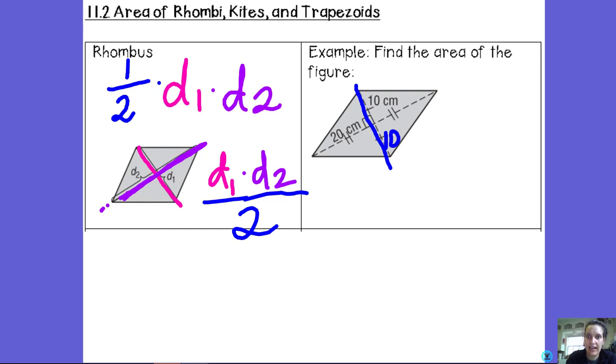So if this is 10, this is 10, and so that whole diagonal, diagonal 1, is going to be 20. If this is 20, then this is 20, and that whole diagonal 2 is going to be 40.